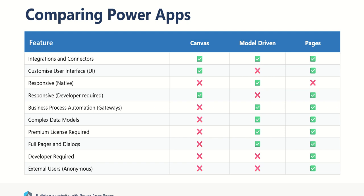Complex data models: Canvas apps are more focused on the user interface than the data in the back end. Model-driven apps is the complete opposite — you start by building out your database, your fields, your tables, your relationships, and only in the last stage do you spin up the user interface from that. Similarly with PowerApps Pages — you have to build out the database in the background first, and then you build out your pages.